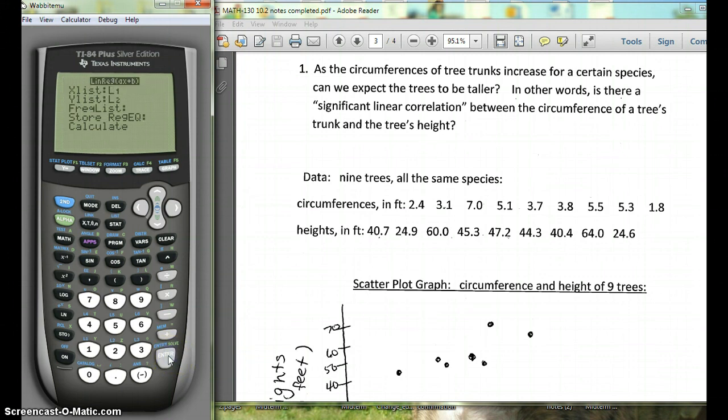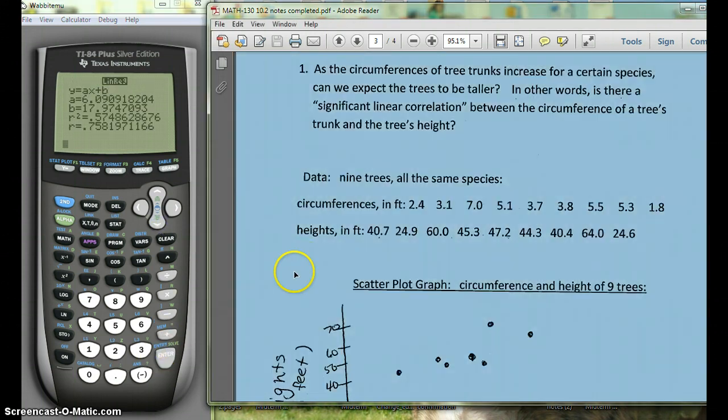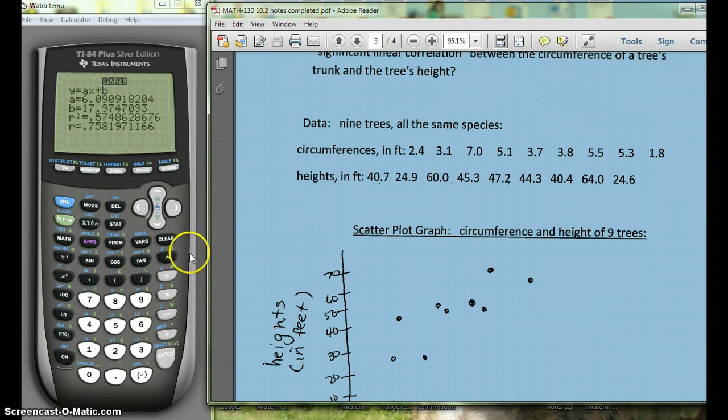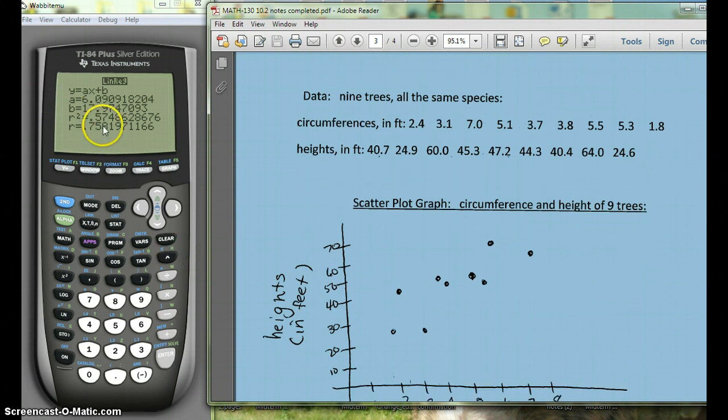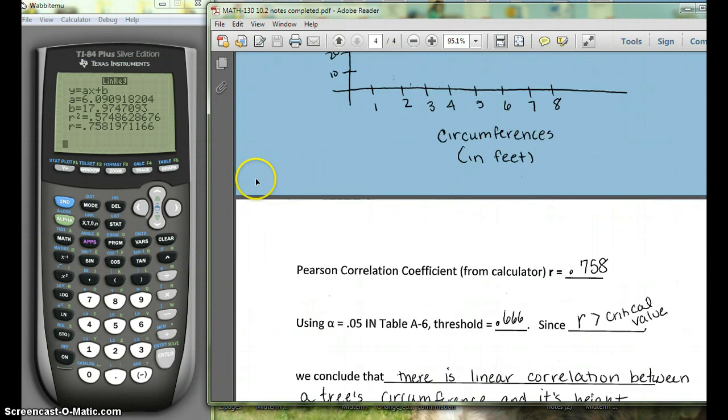Now if you have an 83 this is just going to go back to the home screen and you'll hit enter one more time. With an 84 you want your X list to say L1, your Y list to say L2, and you want these other two to be empty. So if anything's in there hit delete or clear. Then we're going to hit calculate. And here it gives us our R value down here at the bottom. If you're missing that, try the diagnostic on we did at the beginning of the video.